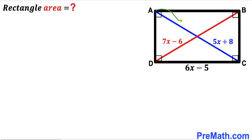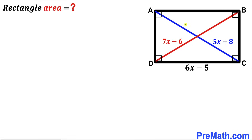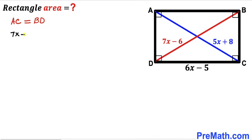We can see that the blue diagonal AC is represented by 5x plus 8, whereas the red diagonal BD is represented by 7x minus 6. Since both diagonals belong to the same rectangle, the diagonal AC length has got to be equal to the diagonal BD length. So we can write 7x minus 6 equals 5x plus 8.